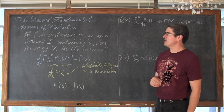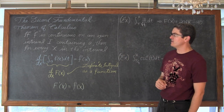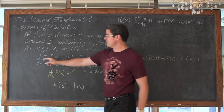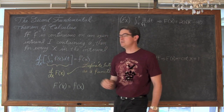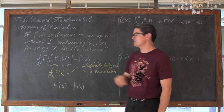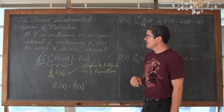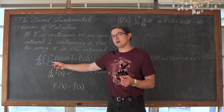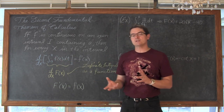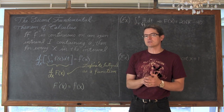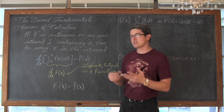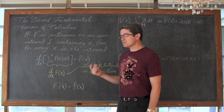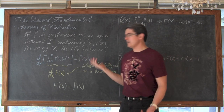If f is continuous on an open interval i containing a, then for every x in the interval, the derivative with respect to x of the definite integral of f dt from a to x is equal to f. It seems like if we have a definite integral whose lower bound is a constant and whose upper bound is the variable x, we can see there is a lowercase f and a lowercase f — we can just take t out and plug in x to get our answer.